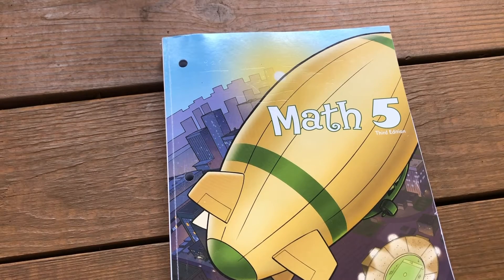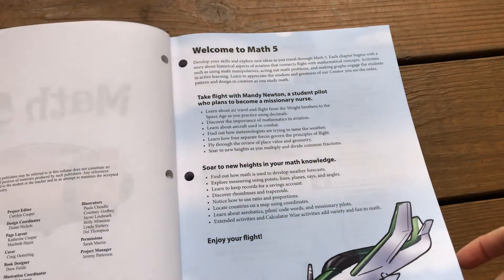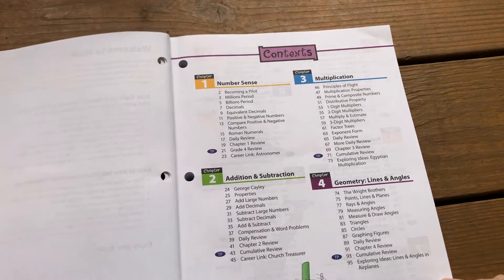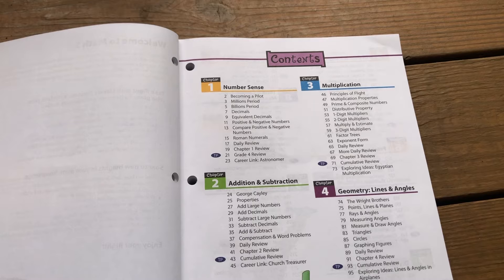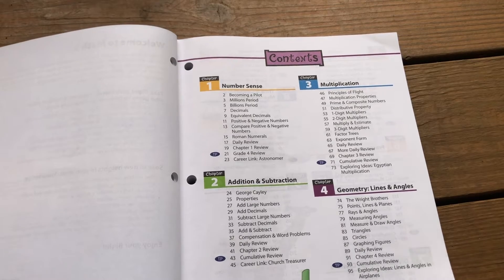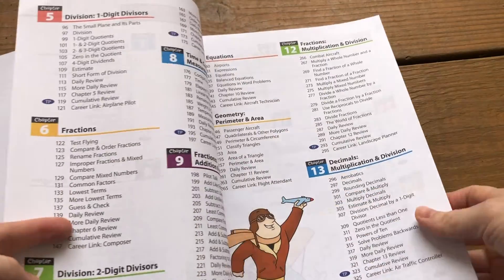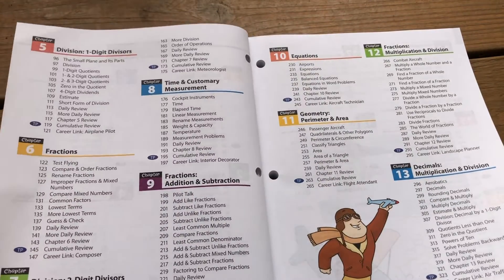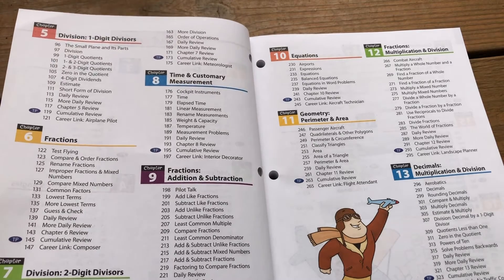So here's the third edition of BJU Press Math. This is the student work text and this is all you need to teach math to your fifth grader. So it starts the year, I would say the first couple chapters have been generally review of stuff we did last year and depending on how long your summer break is your child may need to spend more time on this or you may be able to go really quickly through the first couple chapters and then it starts doing maybe some newer type topics.